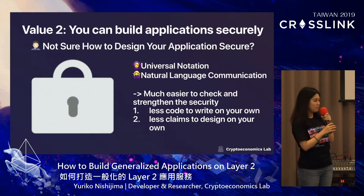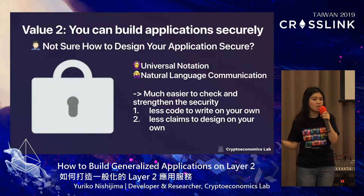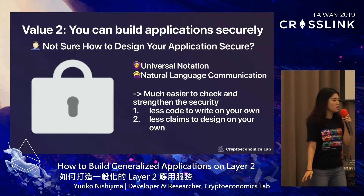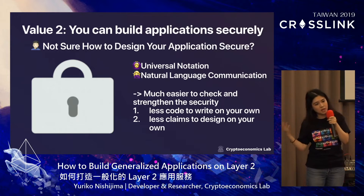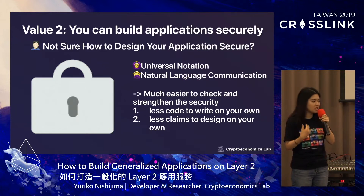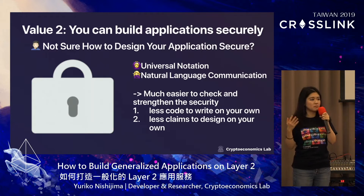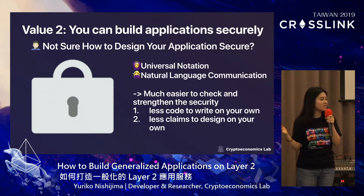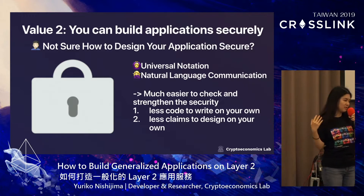The second value is you can build applications very securely. Expression of all fraud proof verification is standardized with a shared universal notation. Before, discussing exit games specifically designed for an application was very challenging and time-consuming. Now, with our framework, it's much easier to check and strengthen security from two aspects: first, you write simpler code, reducing potential bugs; and second, claims designed for applications are interpreted in the same way both in smart contracts and clients, resulting in fewer potential bugs.